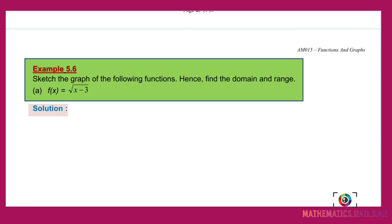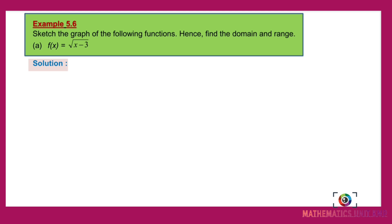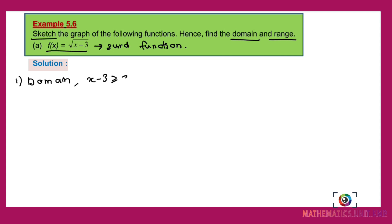Now we will look at three examples. Example 5.6: sketch the graph of the following functions and find the domain and range. Question A: f(x) equals √(x minus 3). First, we find the domain by solving x minus 3 ≥ 0, giving x ≥ 3.